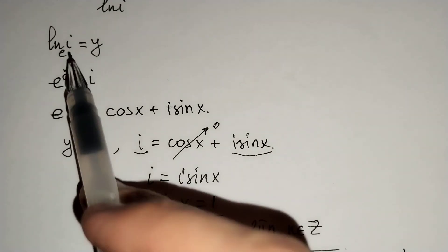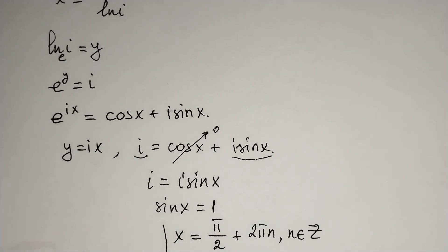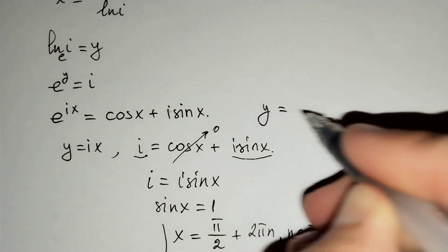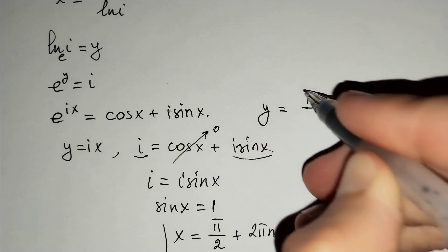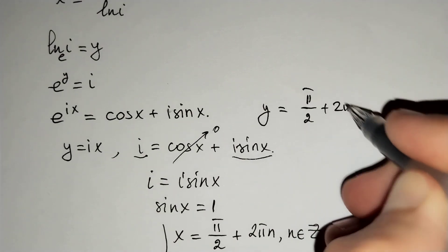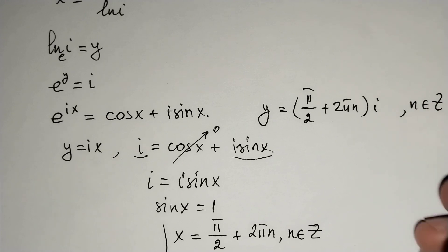because ln i equals y. We should find ln i and y equals i times x. x is pi over 2 plus 2 pi n times i and n belongs to integers.